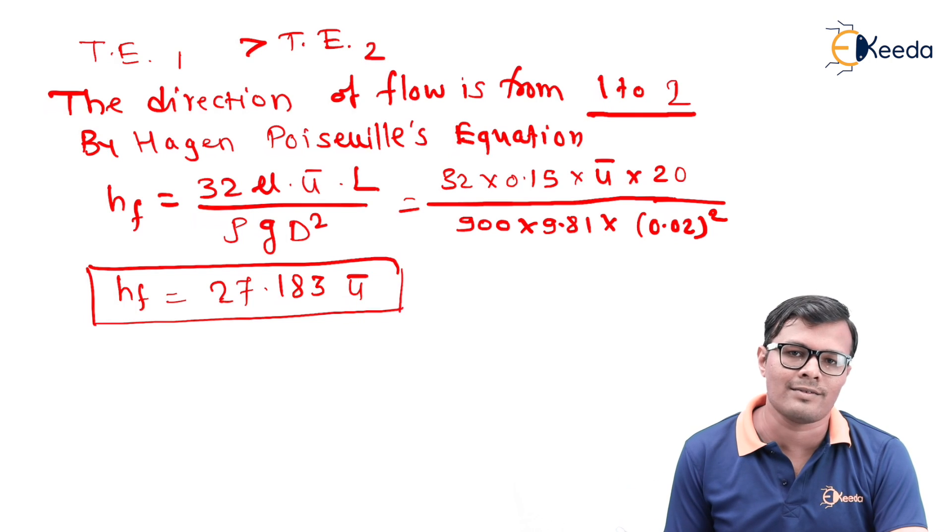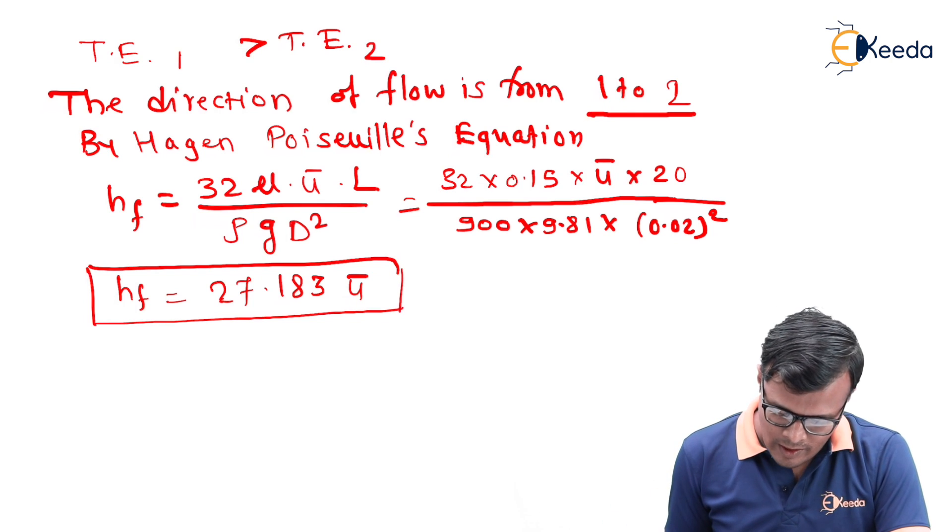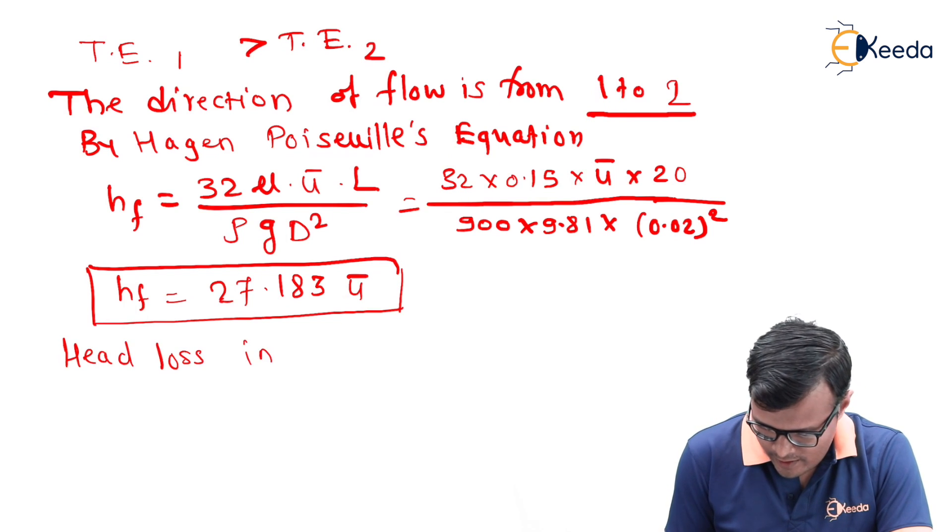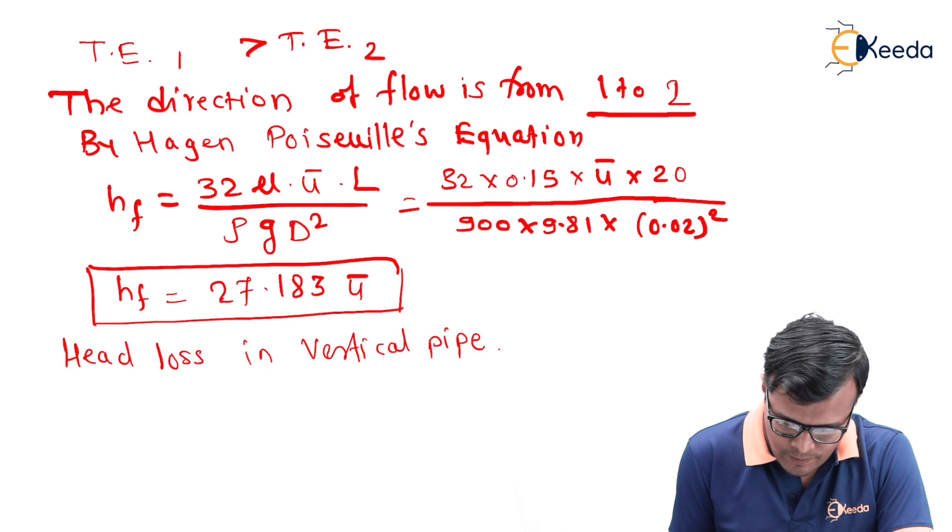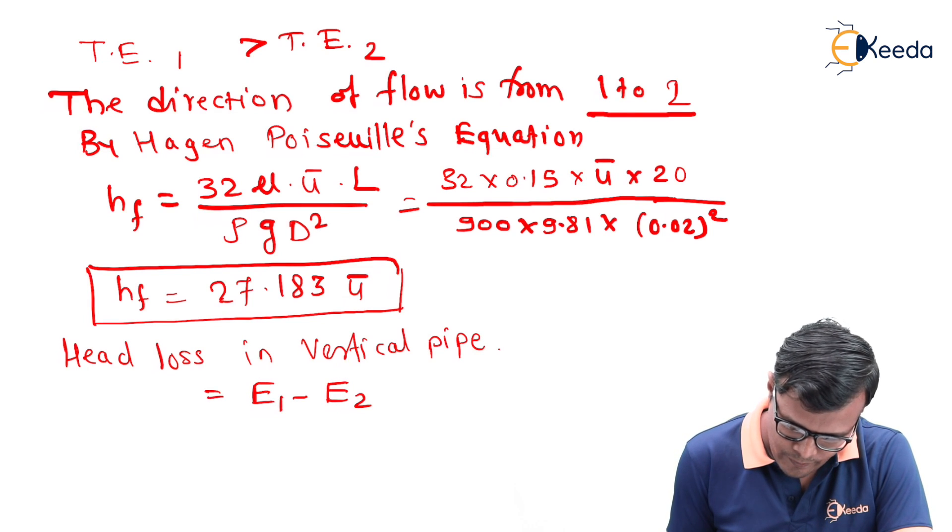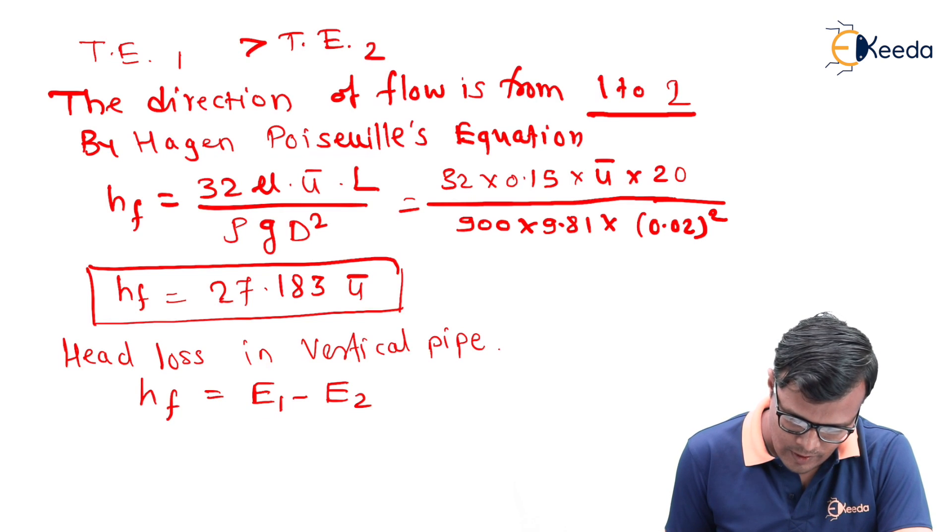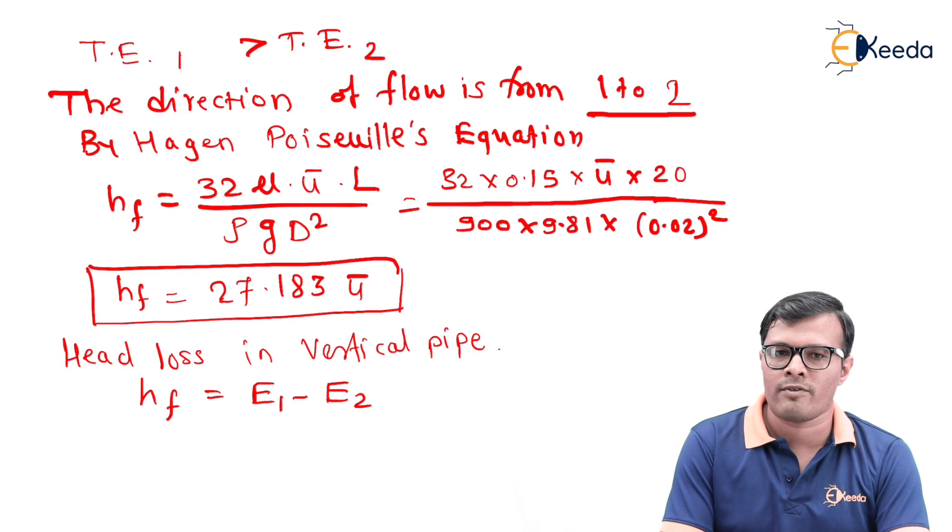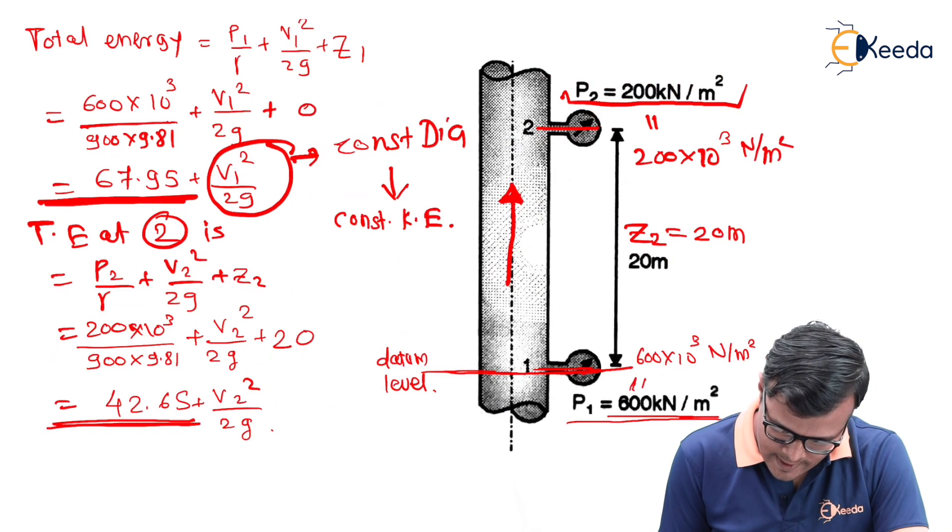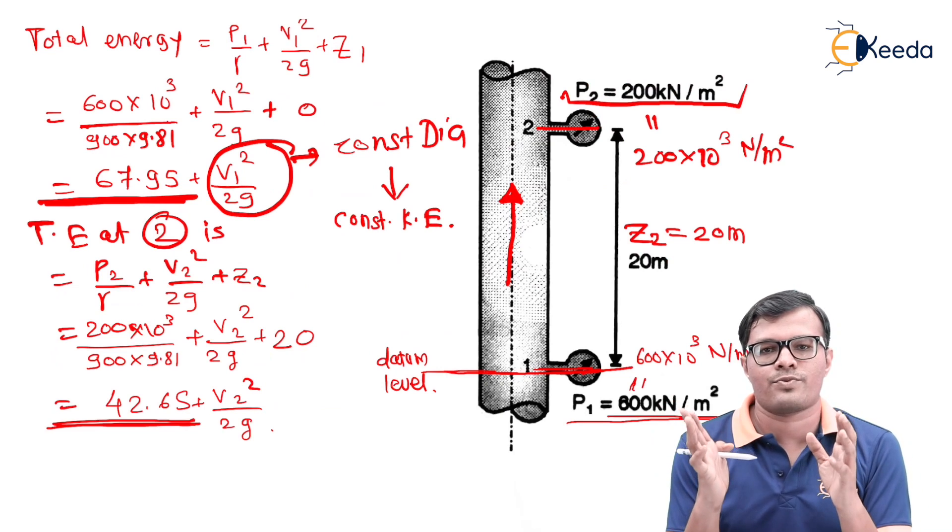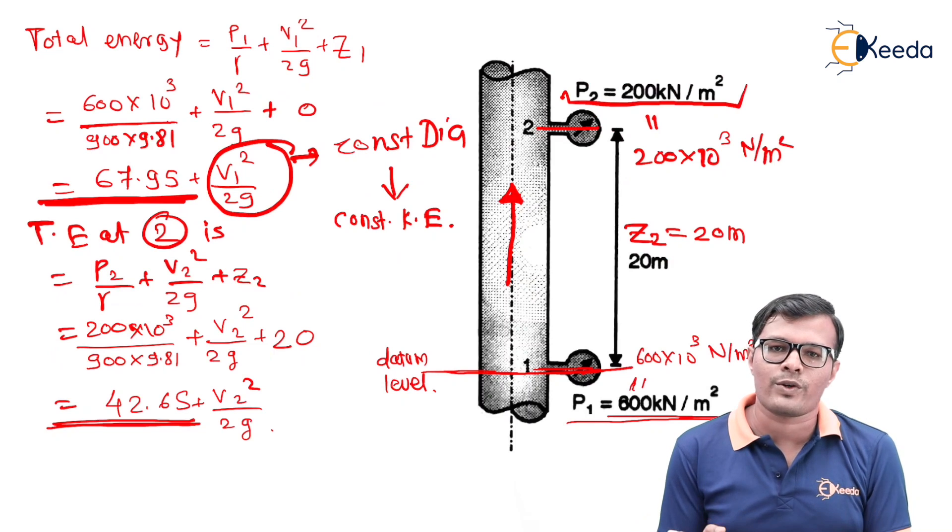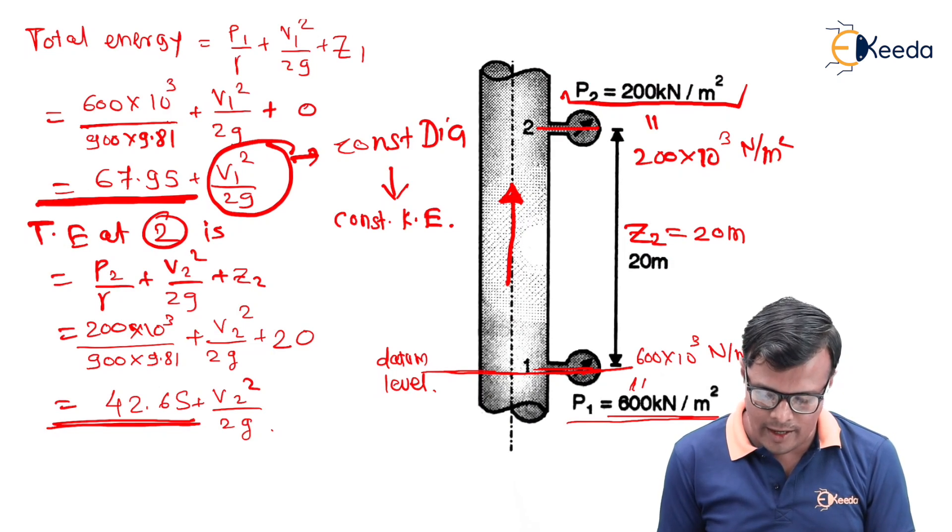It is necessary to use another concept. We will consider head losses. Head loss in a vertical pipe is energy 1 minus energy 2, which equals HF. We have already found that energy 1 value is the larger value and energy 2 is the lesser value. When we subtract energy 1 minus energy 2, the common term V1 square upon 2g gets cancelled. We're going to consider only the values 67.95 and 42.65.